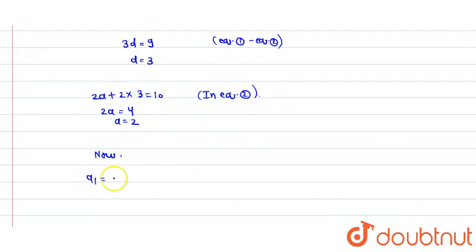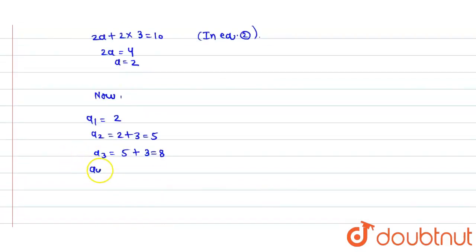If a is 2 and d is 3, then A1 is 2, A2 is a plus d which is 5, A3 is 5 plus 3 which is 8, A4 is 8 plus 3 which is 11, A5 is 11 plus 3 which is 14, and A6 is 14 plus 3 which is 17. So these are the required numbers of our arithmetic progression.